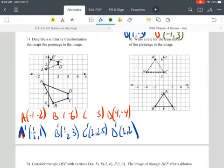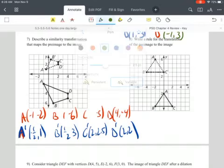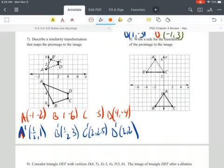For number seven, we need to look at visually what's happening and also take a look at the ordered pairs. When I write down the ordered pairs, I recognize that all of my prime values are half of what the original ones were.